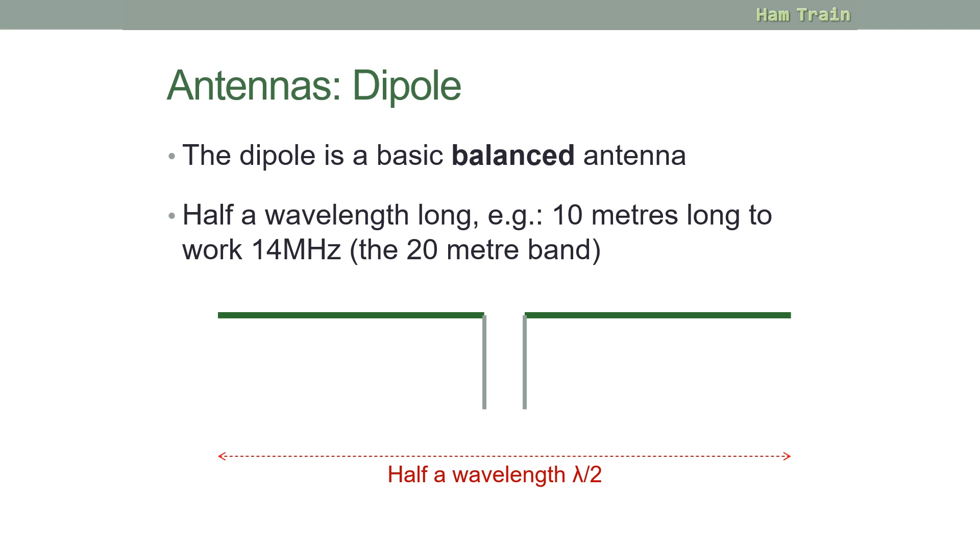First off we're looking at the dipole antenna. On the screen here you can see a picture of a basic dipole. These are the two parts of the antenna that do the work. So a dipole is a balanced antenna. You can see two equal parts, meaning it's balanced. Ideally you'd want to feed this with a balanced feeder as well, which is the ladder line or twin feeder.